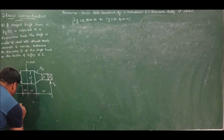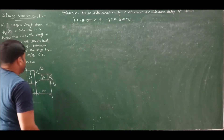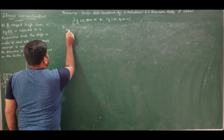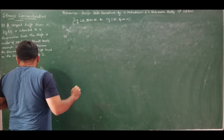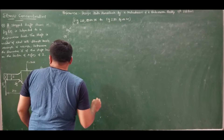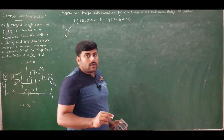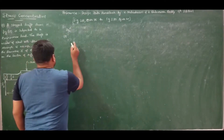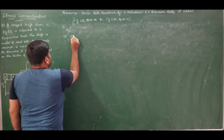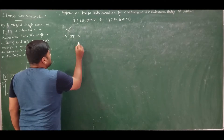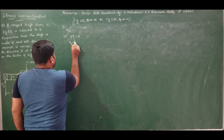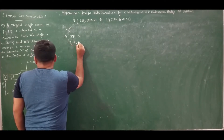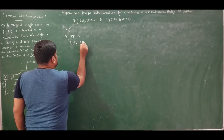Let us now solve this problem. Since it is a simply supported beam loaded eccentrically, the first step is to find the support reactions. The first condition is: the sum of forces must equal zero. Ra and Rb act upwards, so Ra + Rb − F = 0.